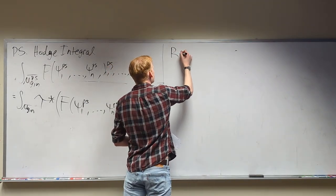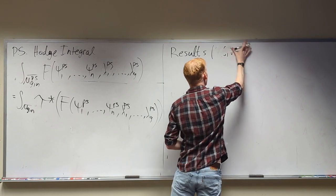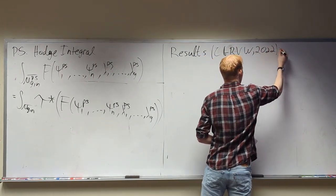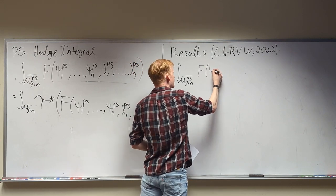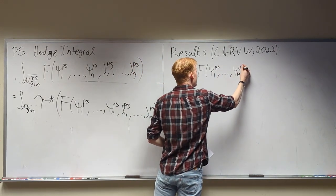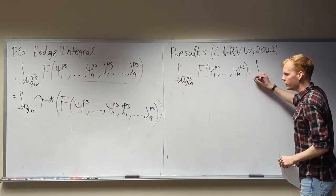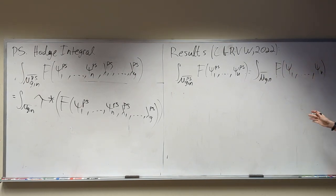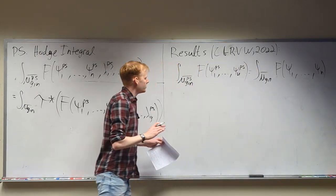These are some results by the same group of people: Renzo, Galagos, Ross, Vanover, and Wise. They started with the easiest bunch: what if you have a pseudo-stable Hodge integral of just psi classes? Well, we know the pullback of a pseudo-stable psi class is a stable psi class, so this is equal to exactly its stable counterpart. Once we've gotten something that's stable, it's sort of not our problem anymore.